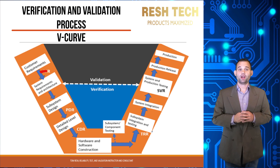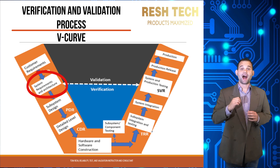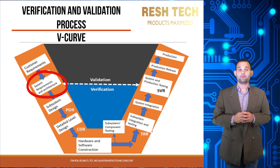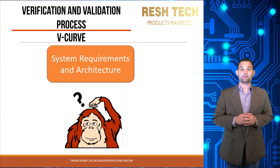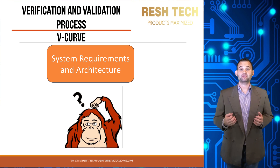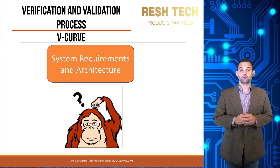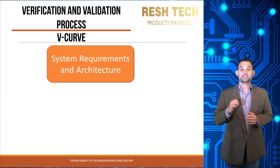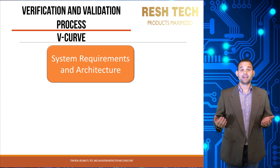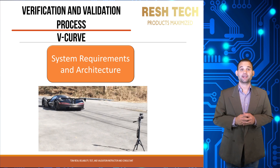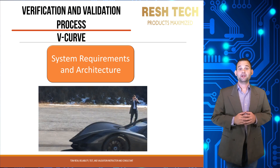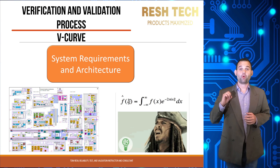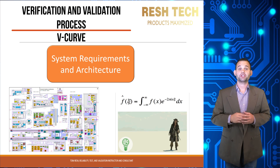The next step is the system requirements. This is where engineering teams come up with a high-level technical solution to meet the customer requirements. Some people think customer requirements and system requirements are different terms for the same deliverables, but this is far from the truth — those terms are not interchangeable. For example, a customer requirement may state that a vehicle must go 0-60 in 3 seconds, but this alone is not sufficient for fabricating a vehicle that achieves it.